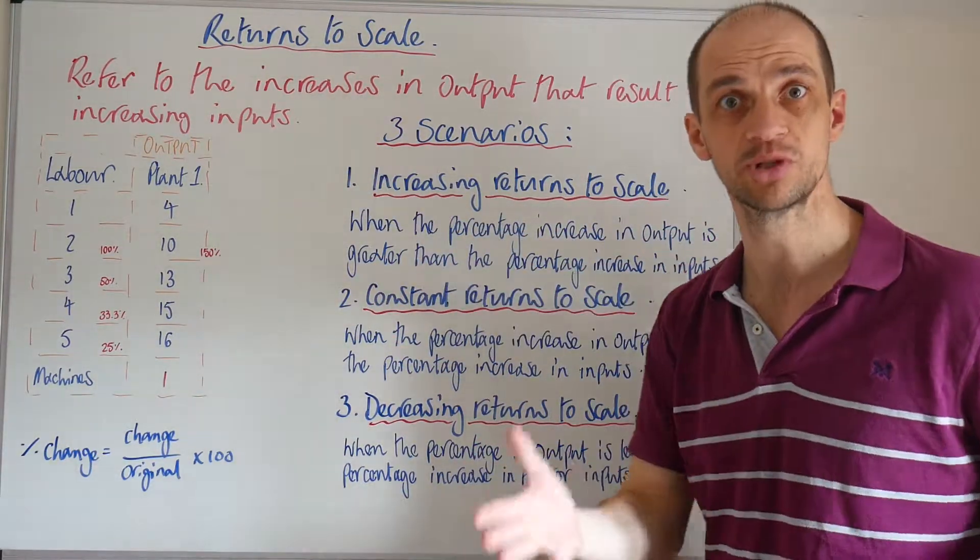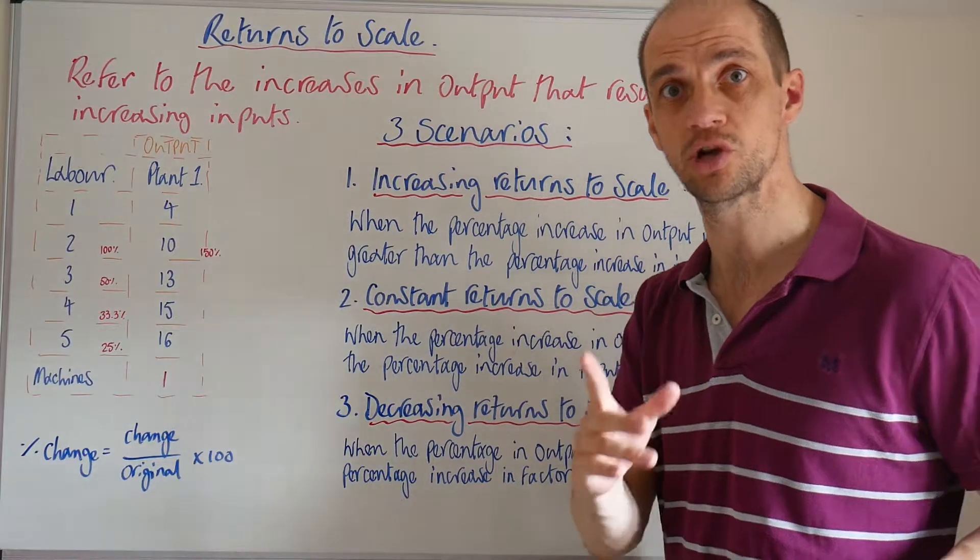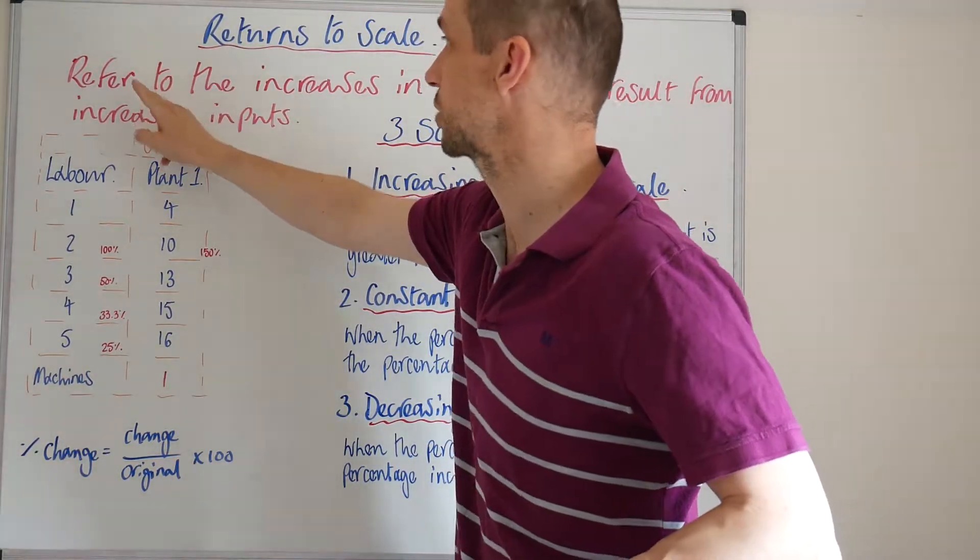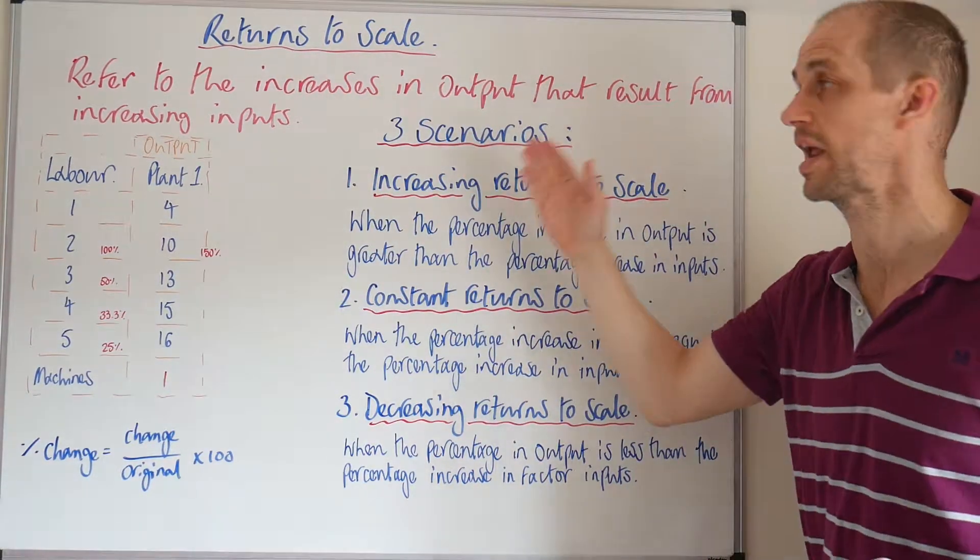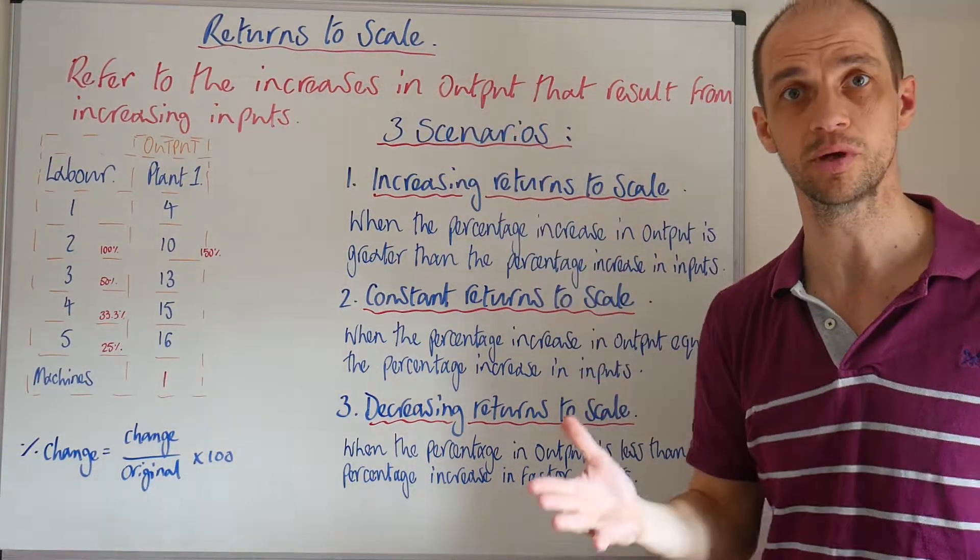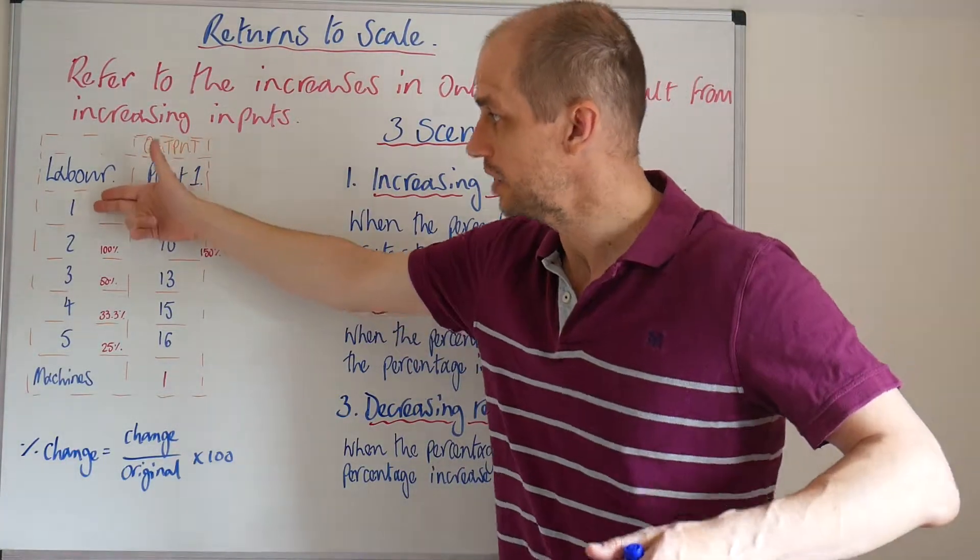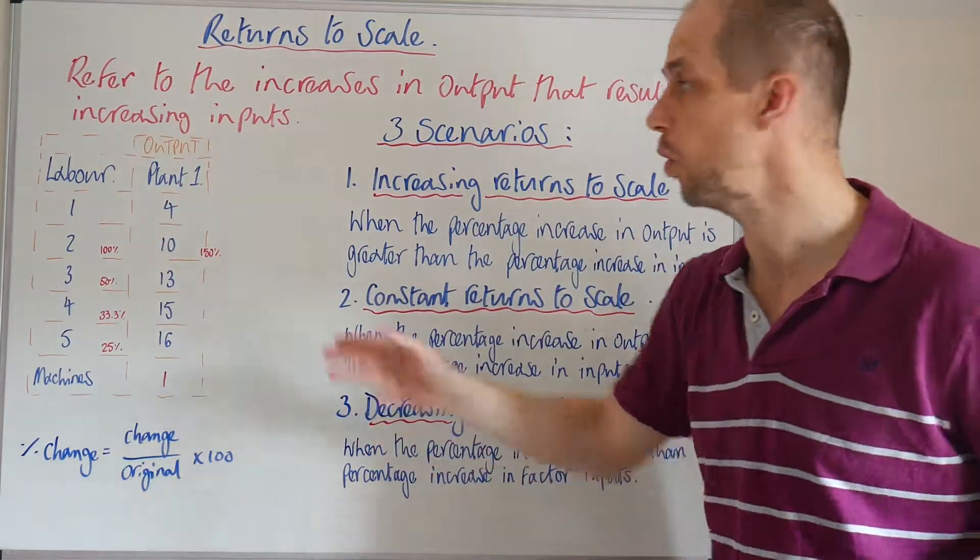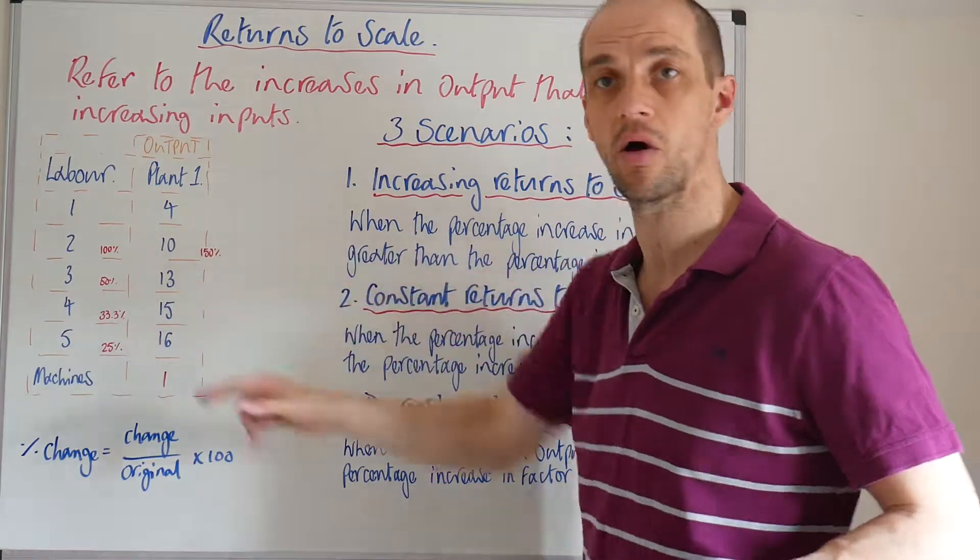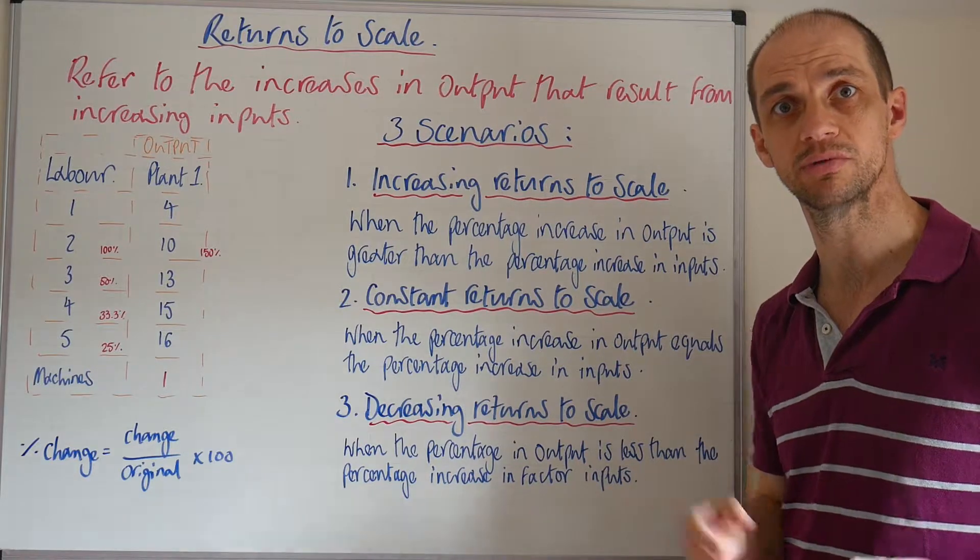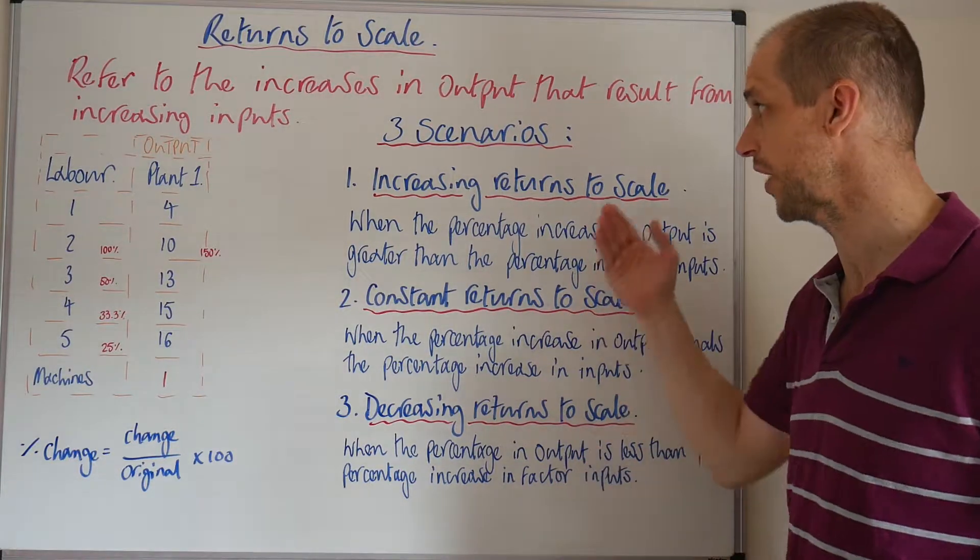They're also important when it comes to looking at the long run average cost curve. Returns to scale refer to the increases in output that result from increasing inputs. It's really about the increase in labour inputs and what increase that derives in terms of output. There are three potential scenarios that organisations face,